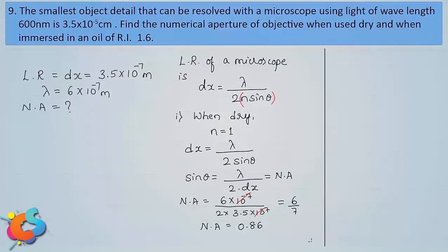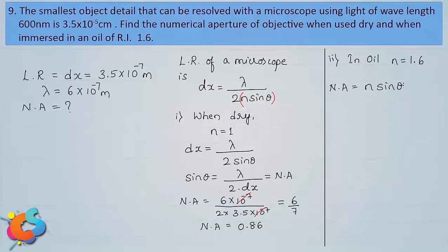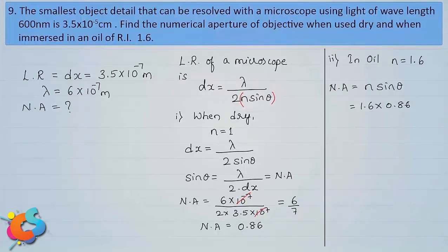Now for the second case, the microscope is immersed in oil with refractive index n = 1.6. Here the numerical aperture is n·sinθ — not simply sinθ as in the dry case. The value of sinθ was already found to be 0.86 from the first case, so sinθ = 0.86.